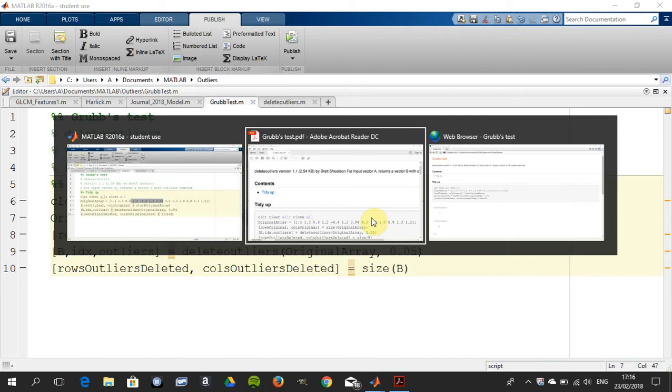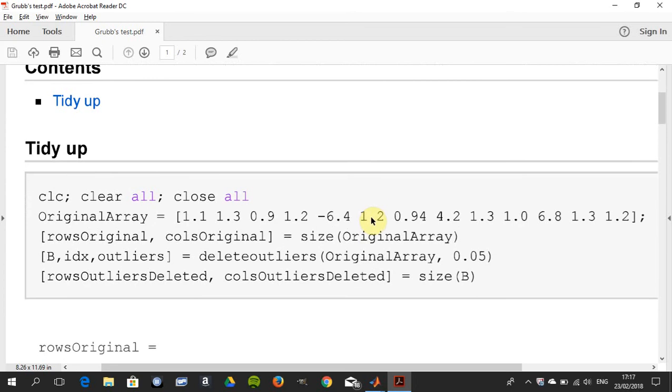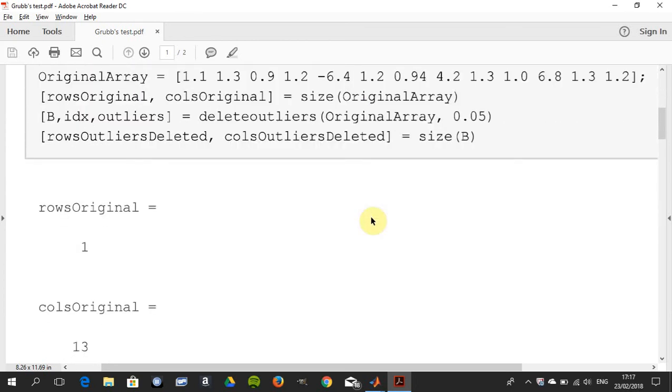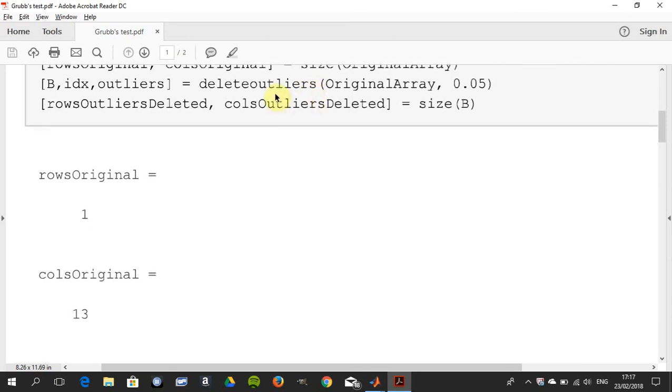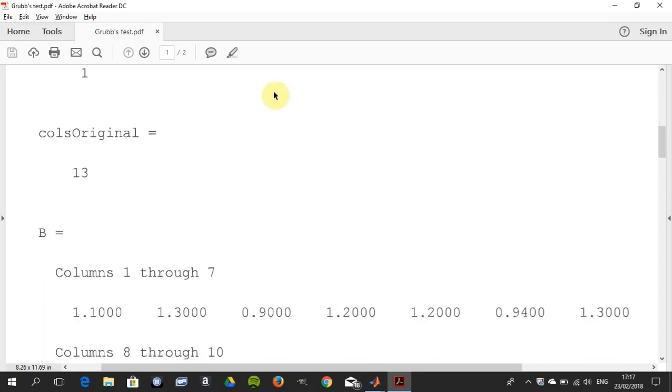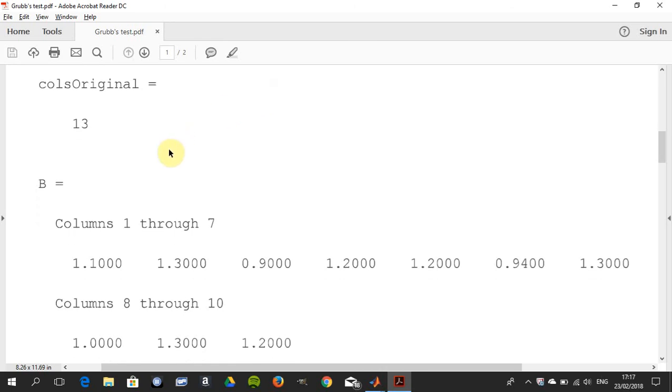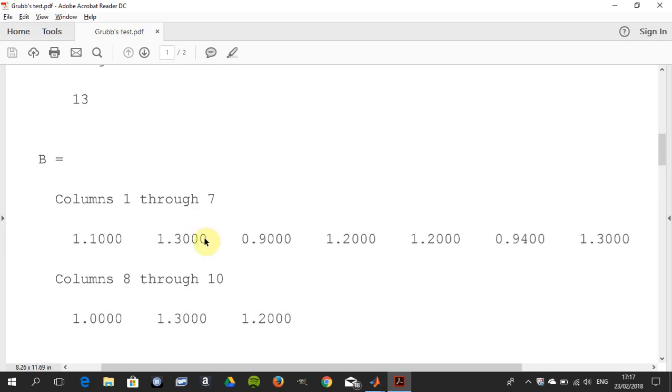So I ran it here. There it is in the PDF. So the original array, row 1, rows of 1 and 13. So there were 13 numbers in the original array, and I got that by using size. I ran Brett's function. So there's the matrix B. The matrix B is the original array minus the outliers. So you can see there's only 10.